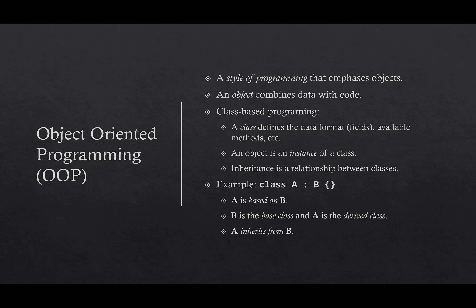Let's slow down and explain some concepts. Inheritance is associated with object-oriented programming, which is a style of programming that emphasizes objects. People sometimes talk about object-oriented programming as a language feature, but really it's more of a paradigm or a way of thinking about programming. Certain languages have features designed to make object-oriented programming easier. C# uses an approach based on classes, which is the most popular way of doing object-oriented programming. You create a class to define the data format and available methods, then create an object as an instance of the class. In this class-based approach, inheritance is the relationship between classes.